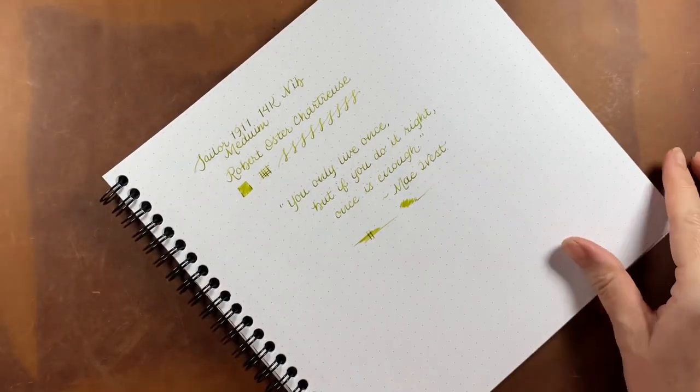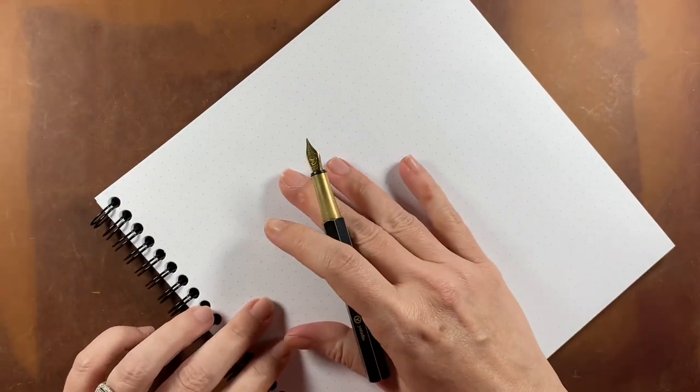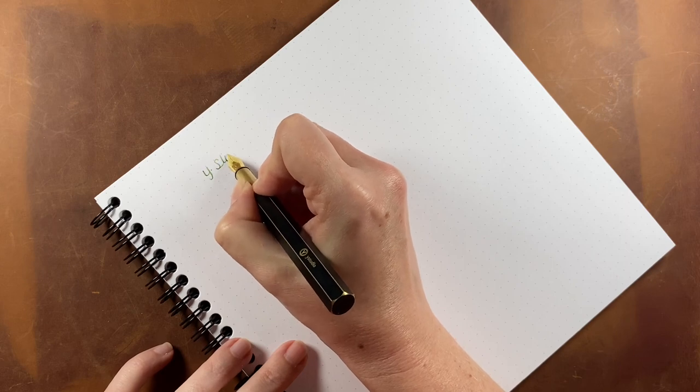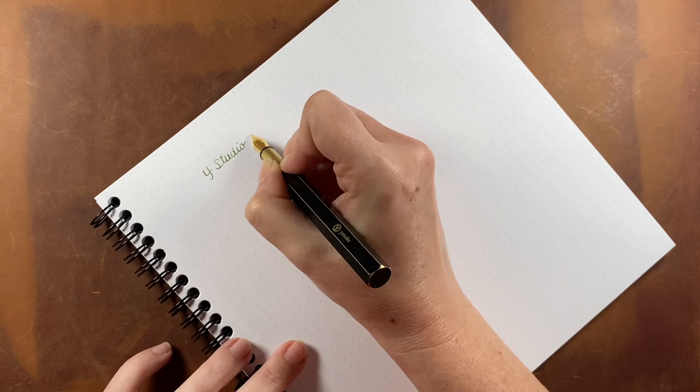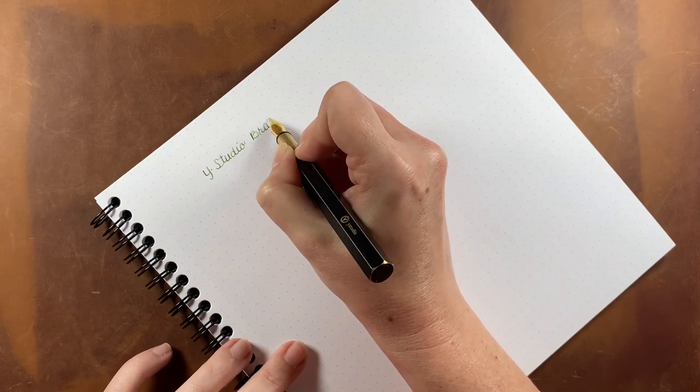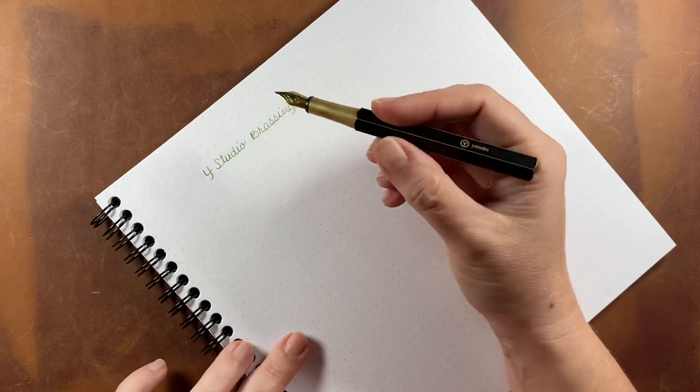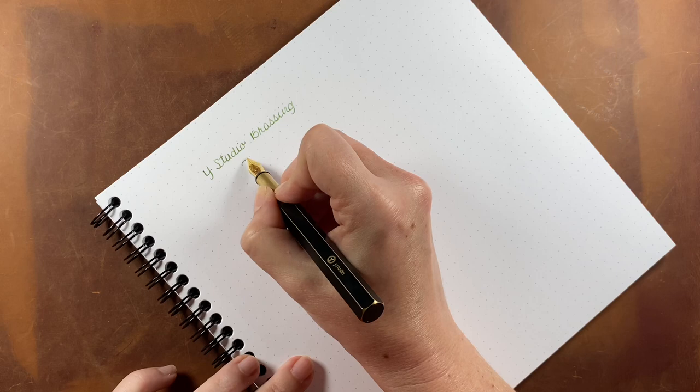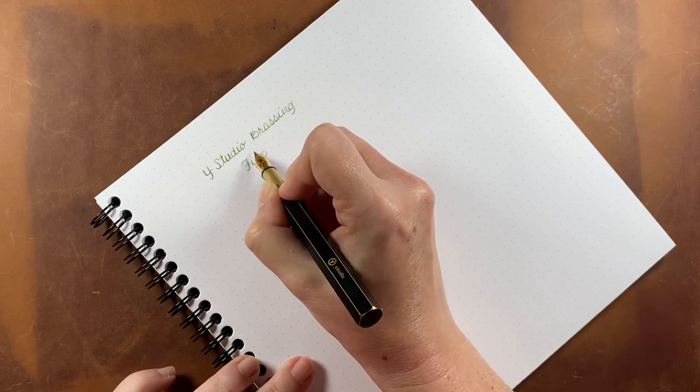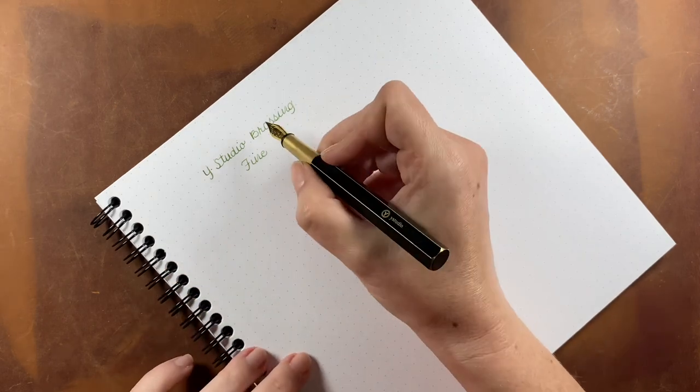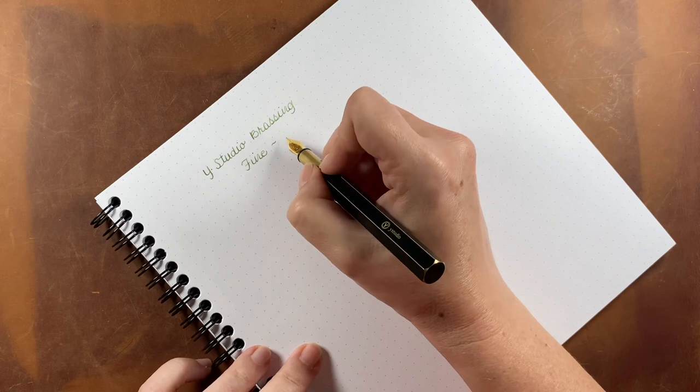Then we'll move on to a little bit greener of the greens, and that is avocado. I'm going to be using a Y-Studio Brassing fountain pen. This one has a fine nib, and I believe I can't really tell from the markings. I believe this is a stainless steel, though.